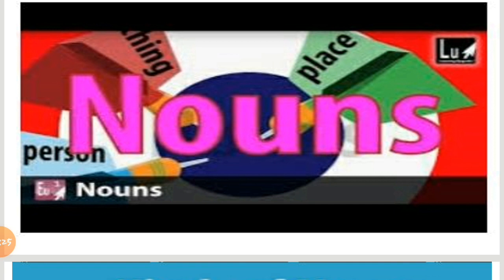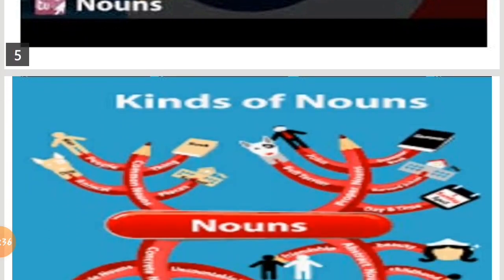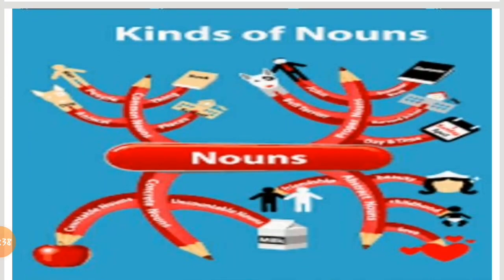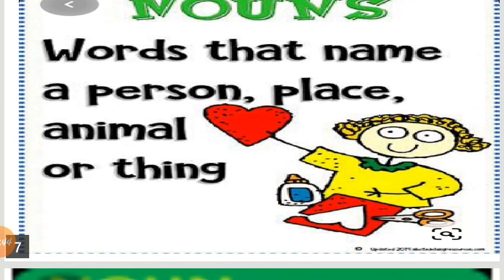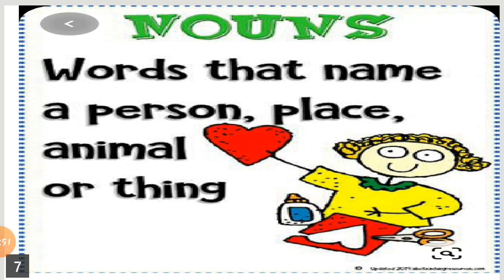Noun is a naming word. For everything we have names, and all the naming words are called nouns. A noun is a word that names a person, place, animal, or thing. For everything we have given a name.